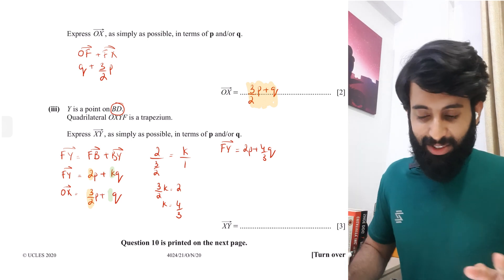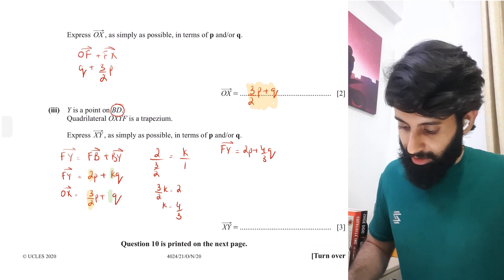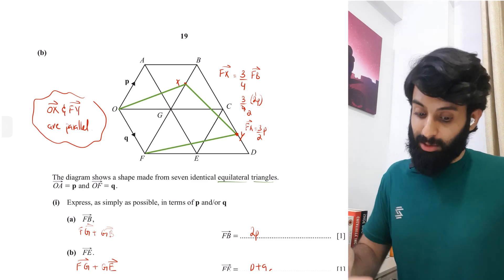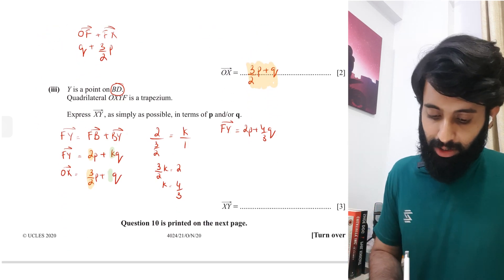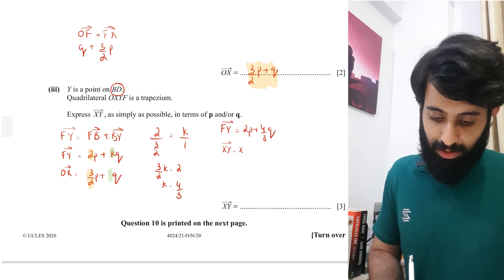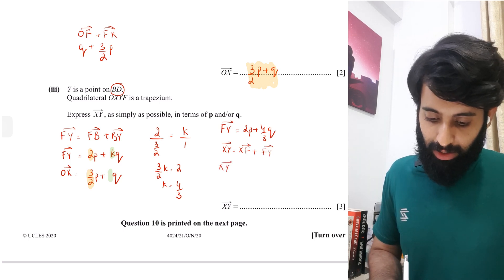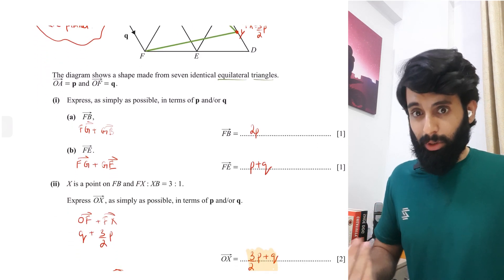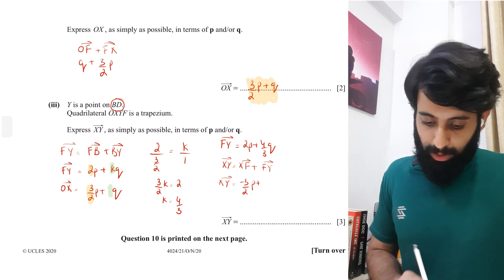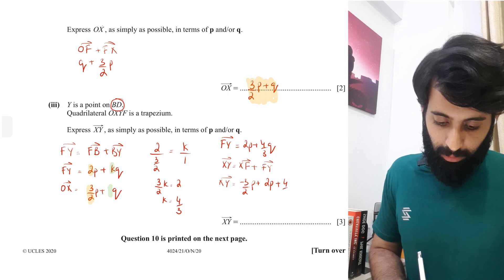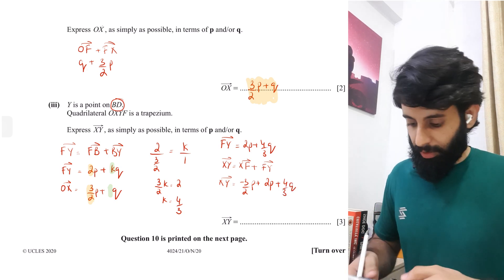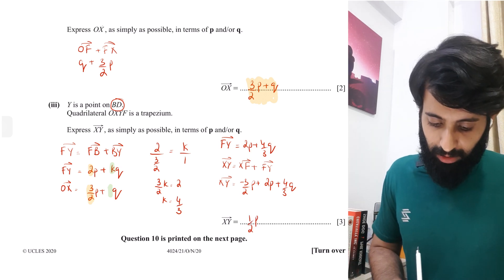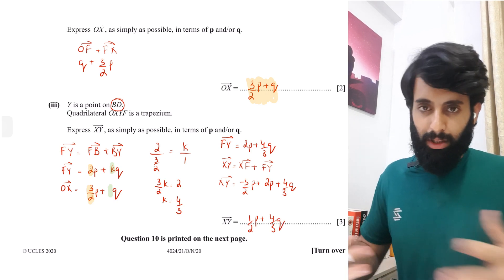We still have to work out XY. To go from X to Y, I'll go from X to F and then from F to Y. X to F is minus 3/2 P (since FX was 3/2 P, we reverse the direction). Then plus FY, which is 2P + 4/3 Q. Simplifying: 2 minus 3/2 = 1/2, so XY = 1/2 P + 4/3 Q.